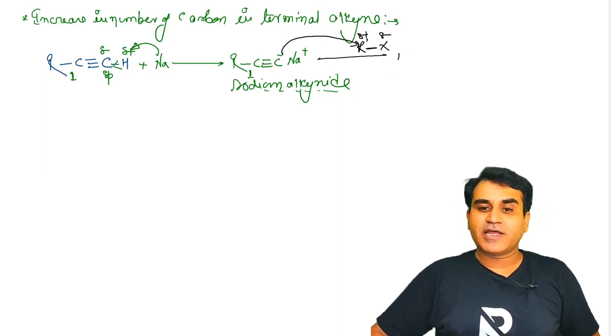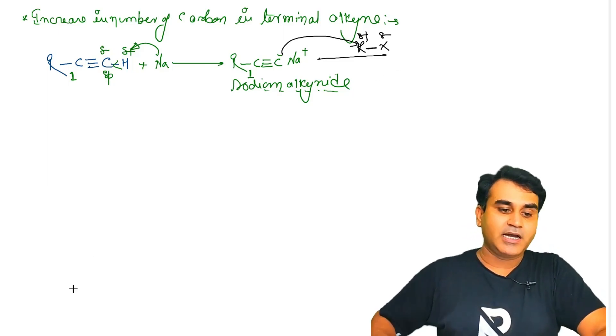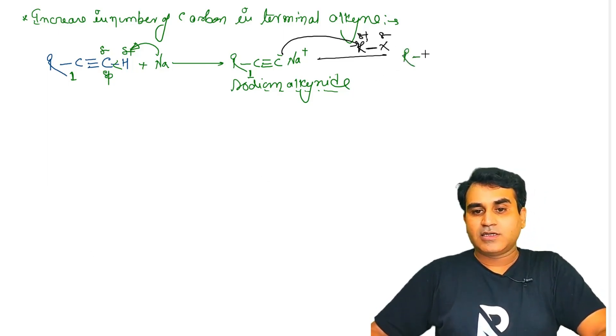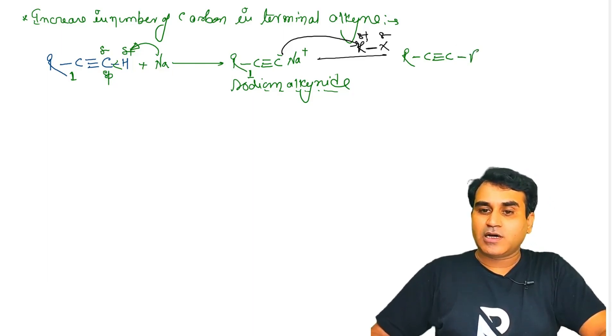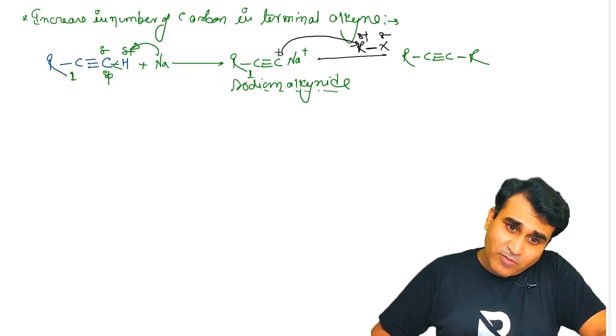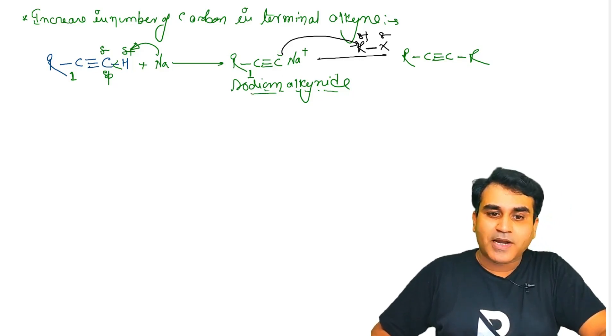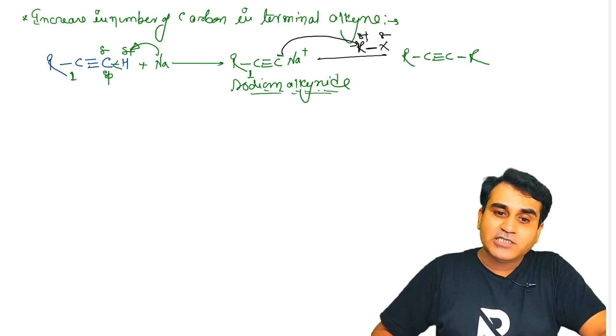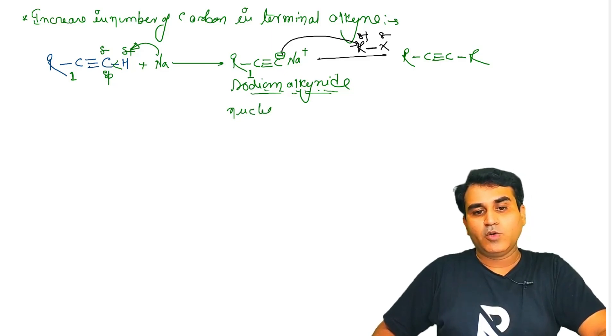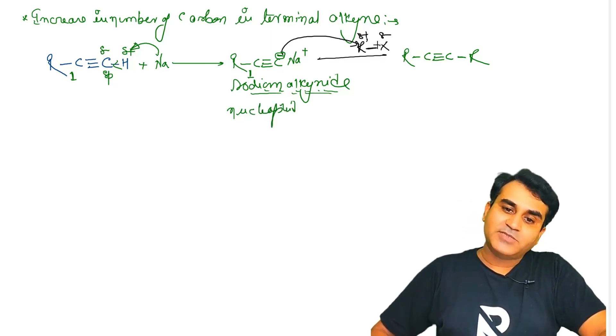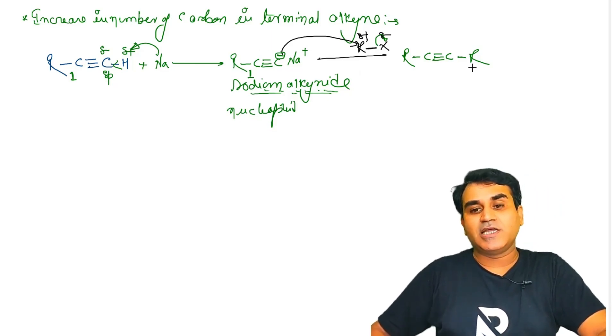Negative carbon will attack here, so we will get R-alkyne group. C≡C⁻, meaning triple bond carbon chain. Sodium alkyneide pe carbon ka charge minus hai. This part will act as nucleophile. X⁻ will go out and this group will attach.